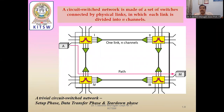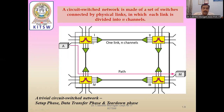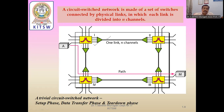A circuit switch network is made of a set of switches connected by physical links in which each link is divided into N channels. Looking at the diagram, a single link may carry N channels — for example, three different channels on one link. Multiplexing and demultiplexing methods are used. N channels are connected with a single link, and multiplexing techniques are used throughout.